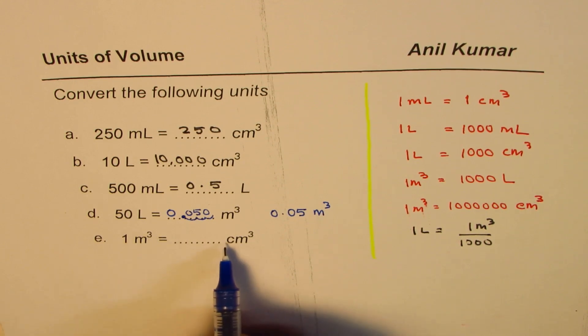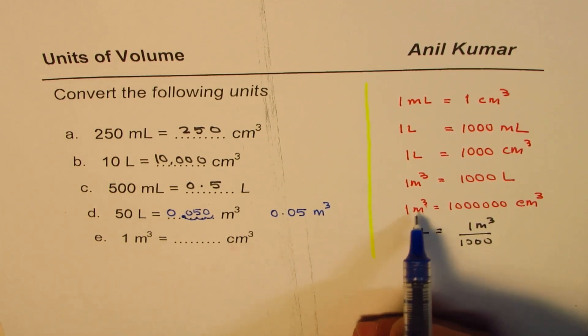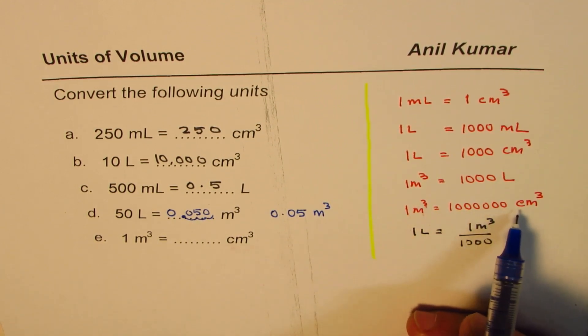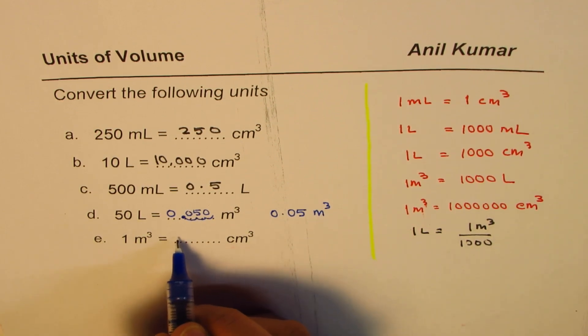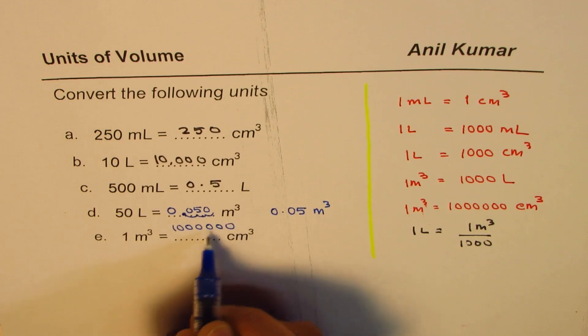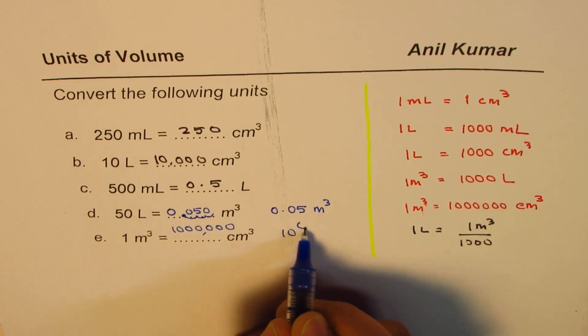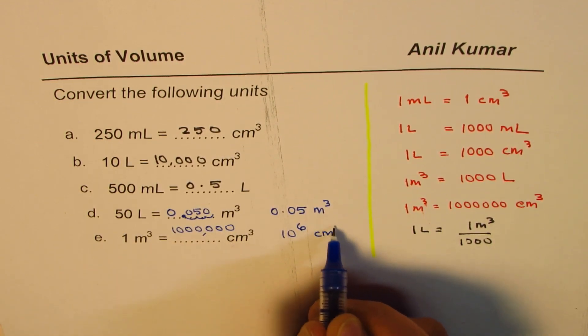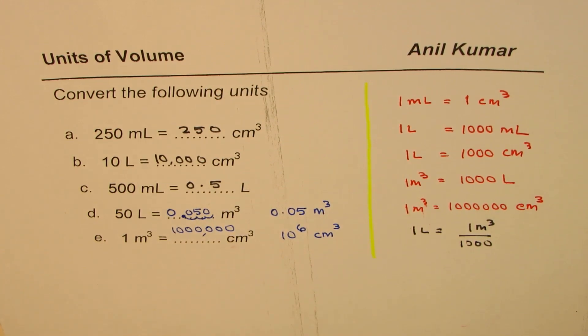One meter cubed is how many centimeter cubed? Now one meter cubed is 1,000,000 centimeter cubed, so we can write this as 1,000,000 or 10 to the power of 6 centimeter cubed. So that is how these units are related.